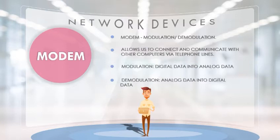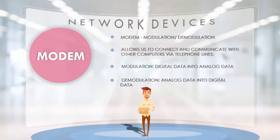Demodulation is the second operation — converting analog information coming into your computer system back into digital data. So an analog signal coming in via cables has to be converted into digital information. That is the demodulation process. So modem stands for modulation and demodulation, converting digital data to analog and back again, which allows two computers to speak with one another and communicate over telephone lines.